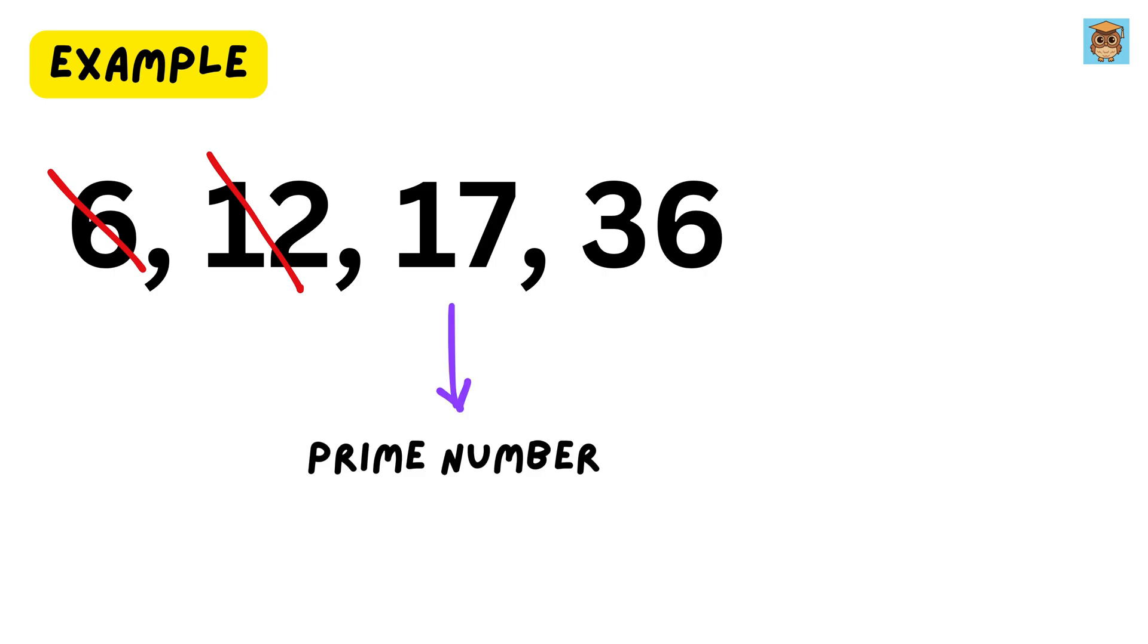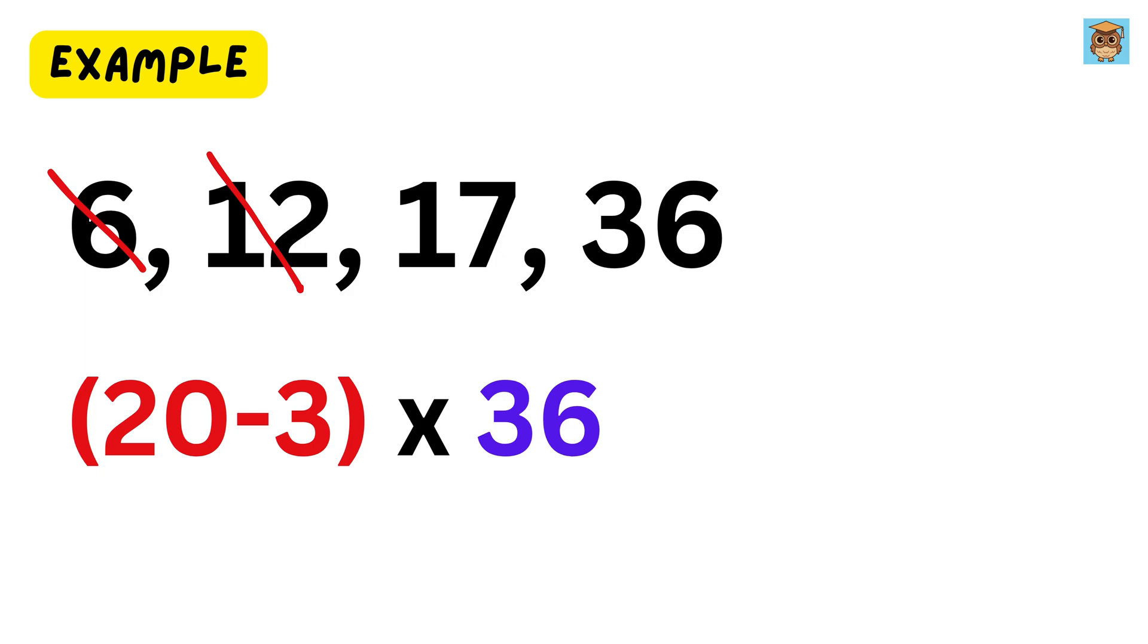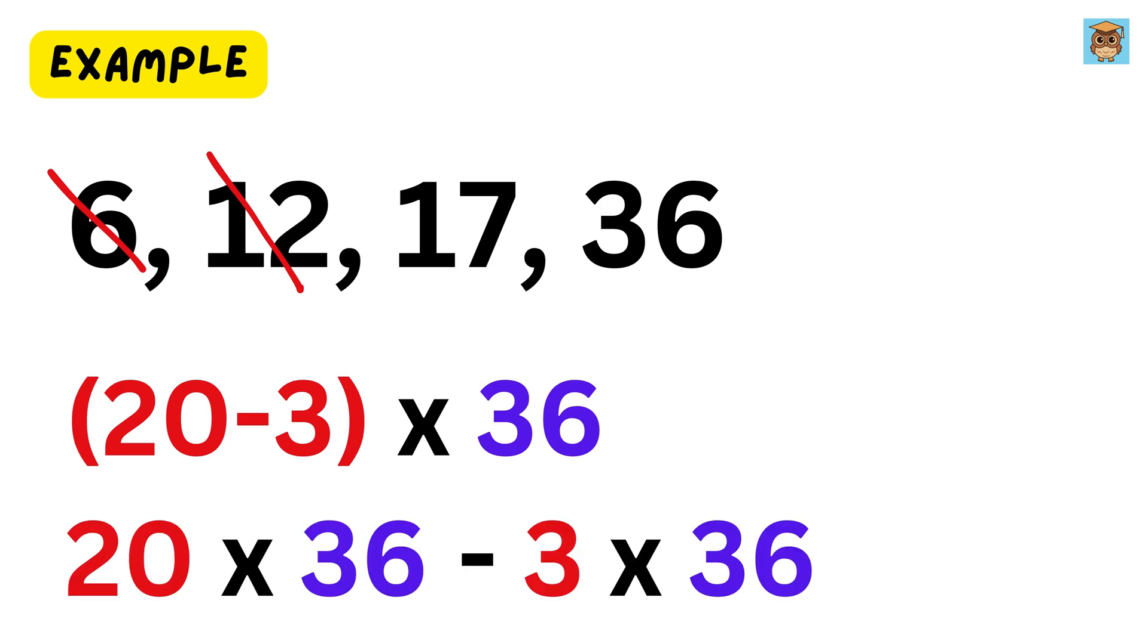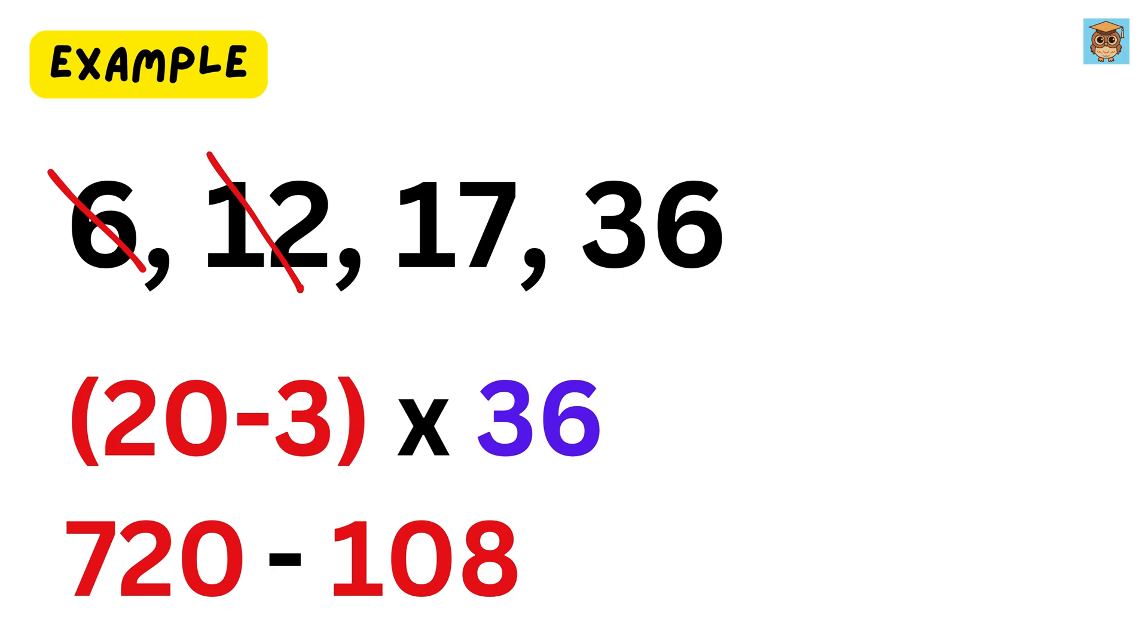Now, 17 is a prime number and therefore just multiply it with 36. Let us multiply it real quick. Write 17 as 20 minus 3. So, it will be 36 times 20 minus 36 times 3, or 720 minus 108, or 612, and that's it. This is our LCM. Isn't this trick super cool?